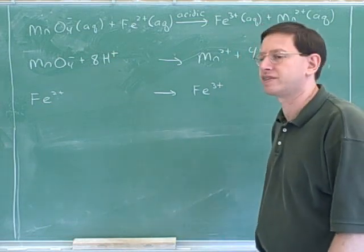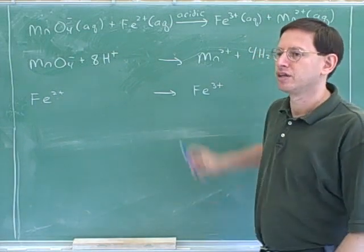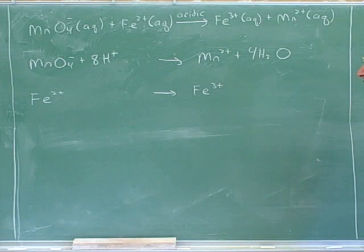So maybe we might have to work this out on paper a little bit. Let's start with the easier case. Let's balance this equation. Which side do we need to add the electrons to? To the right side. And how many electrons? Just one.